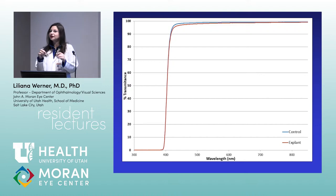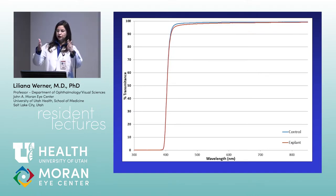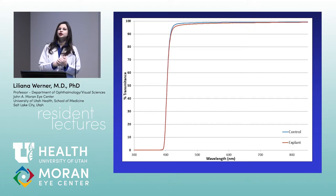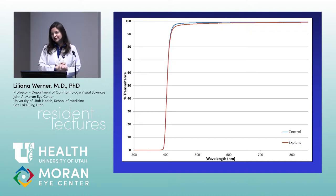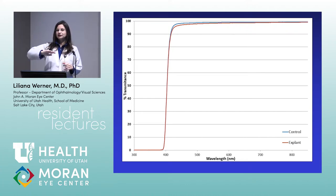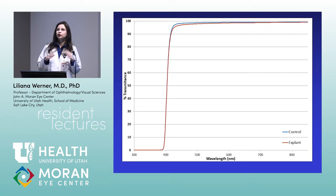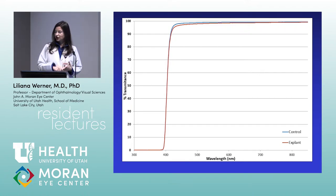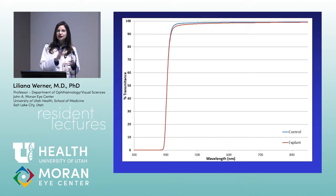Subsurface nano-glistenings and glistenings may start simultaneously and grow independently — they do not seem fully dependent. Subsurface nano-glistenings do not depend on temperature changes; they appear to be a characteristic of the surface of the lens. When performing slit lamp examination and angling the light just right, AcrySof lenses with subsurface nano-glistenings can appear so white that surgeons mistake it for calcification and panic. I receive many emails from around the world asking if an AcrySof has calcified — and it almost never has. You must be aware of this because you will likely encounter it.